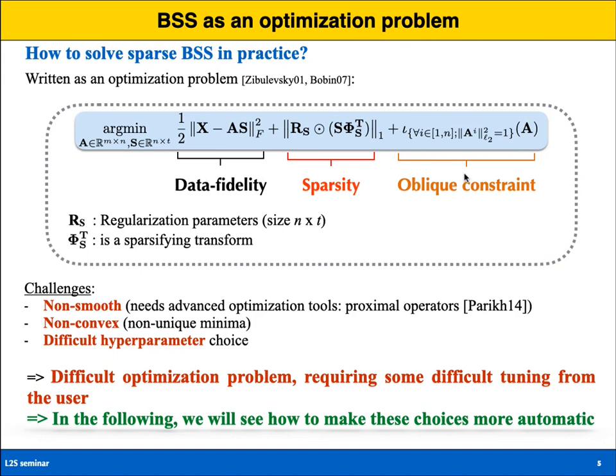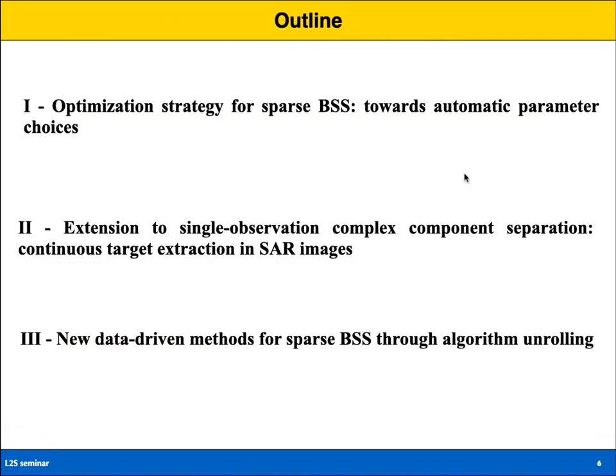The difficulties of blind source separation are: first, it is a non-smooth problem due to the L1 norm, requiring proximal operators. Second, it is non-convex, meaning there is no single global minimum. Third, it requires difficult hyperparameter tuning — choosing the regularization parameter RS is far from trivial, as we will see. Overall, blind source separation methods generally require significant user input, and the question is how we can move toward more automatic methods.